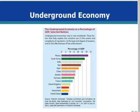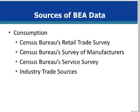The Bureau of Economic Analysis, an agency of the Department of Commerce, is responsible for compiling the NIPA tables. The BEA gets its data from a variety of sources. The consumption data comes from four primary sources, three of which are provided by the Census Bureau. The Retail Trade Survey gathers sales data from a sample of 22,000 firms. The Survey of Manufacturers collects information on shipments of consumer goods from 50,000 establishments. The Service Survey collects sales data from 30,000 service businesses. The BEA also collects information from a variety of industry trade sources.